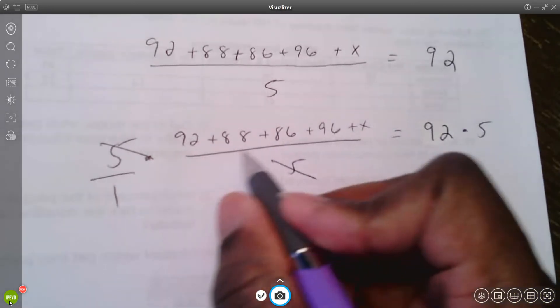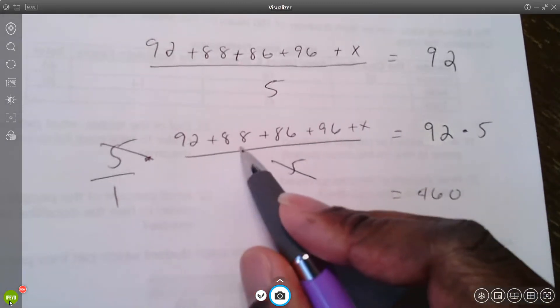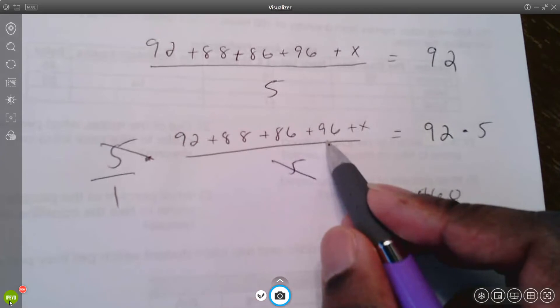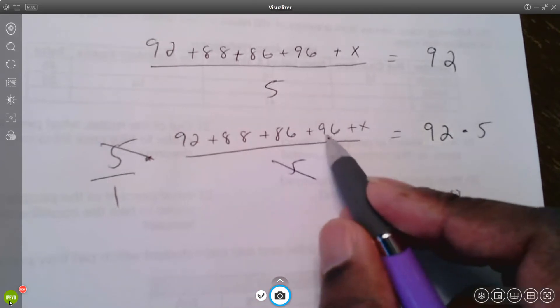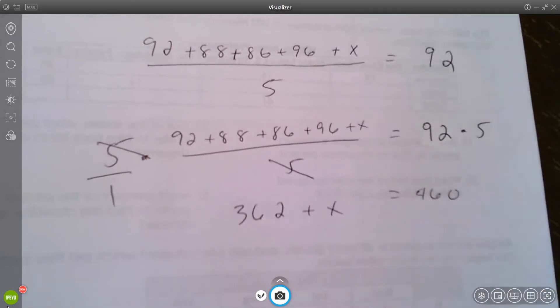That's going to equal all of that added up plus x. Now I don't want to keep writing this over and over, so I'm going to add up 92 plus 88 and 86 and 96 and then add x to it. So this sum is 362 plus x equals 460.